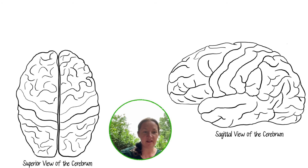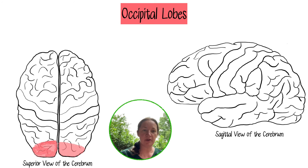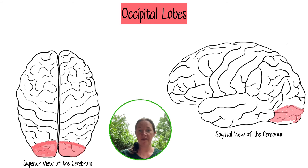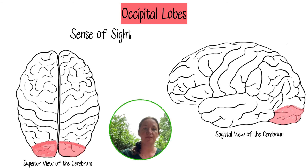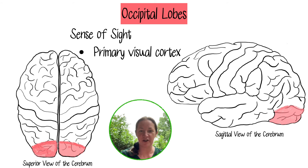The occipital lobes are at the back of the brain — you can see them in both the superior view and the sagittal view. They give you your sense of sight. They are the location for your primary visual cortex, where the processing of vision occurs.